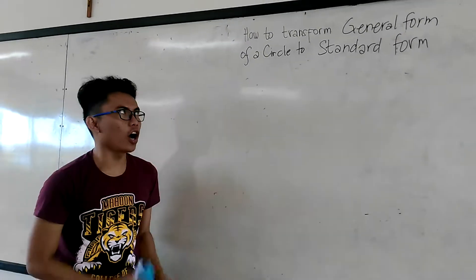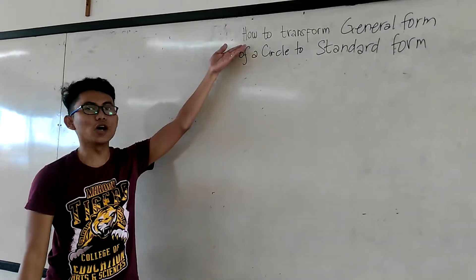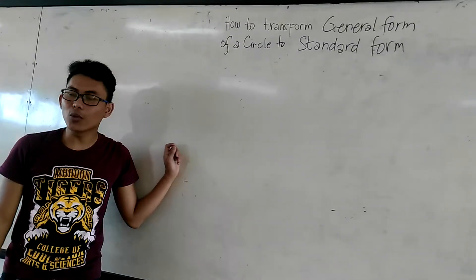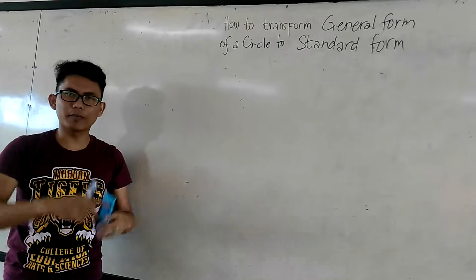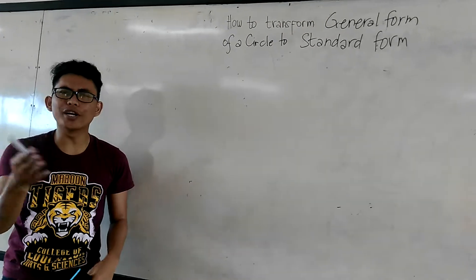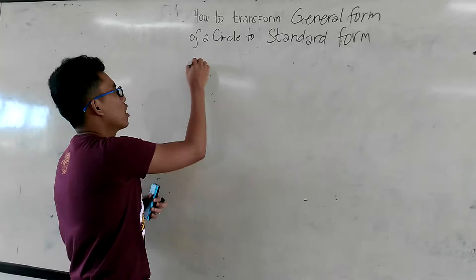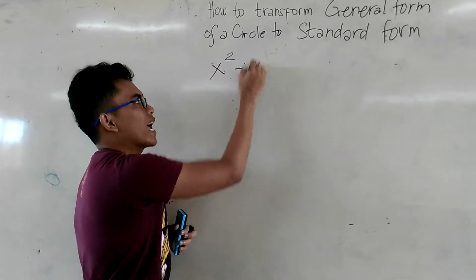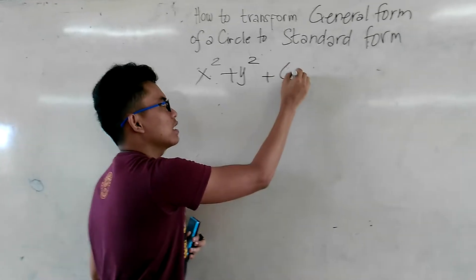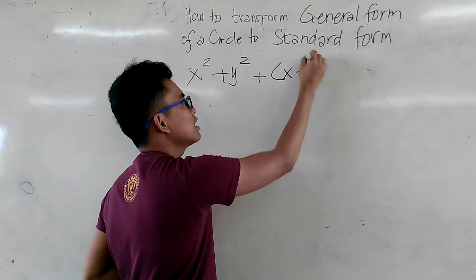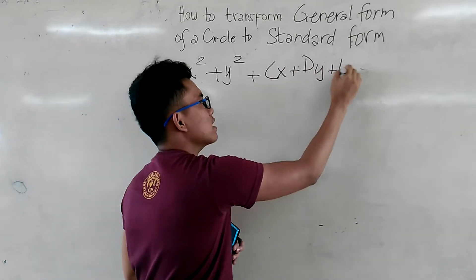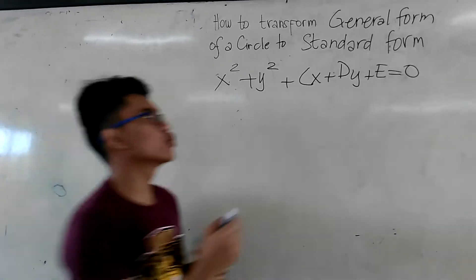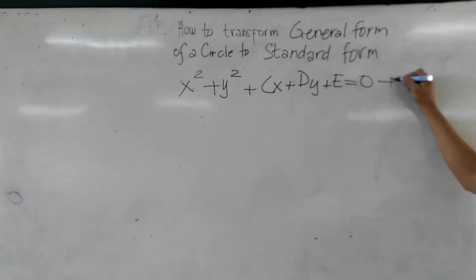Okay, so ngayon, let's start how to transform general form of a circle to standard form. But before that, let's have first the general form of a circle: x squared plus y squared plus cx plus dy plus e is equal to zero. Okay, nakuha ko ba? It is the general form.